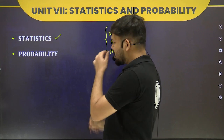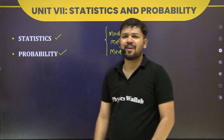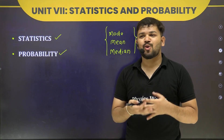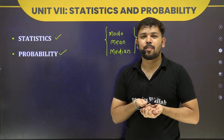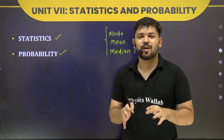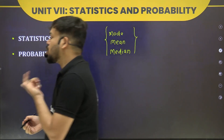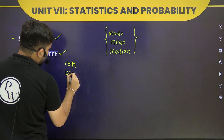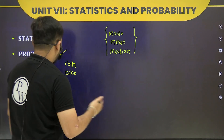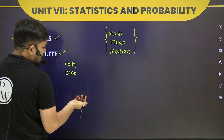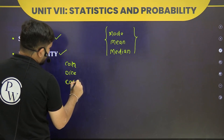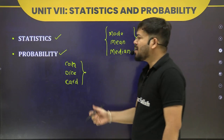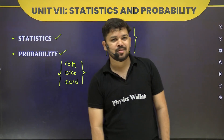In Probability, we use day-to-day life examples — for instance, in a CSK vs RCB match, what are the chances of CSK winning? When tossing a coin, what is the probability of getting two heads or two tails? When throwing a dice, as in a ludo game, and with a deck of cards — getting a red card, red joker, red heart — these types of questions you will see here. It is one of the easiest chapters.